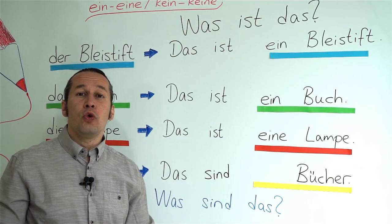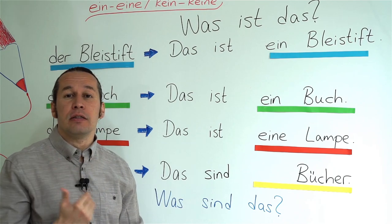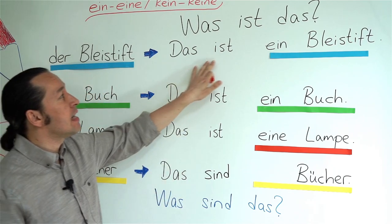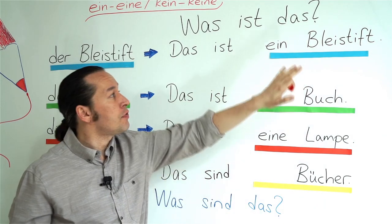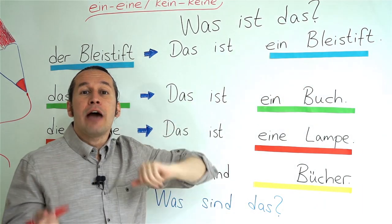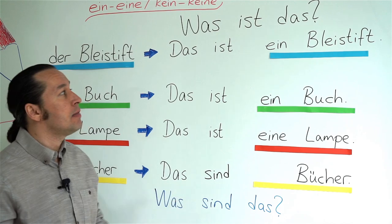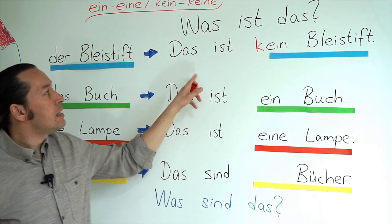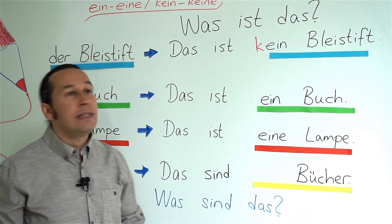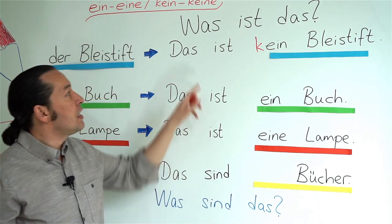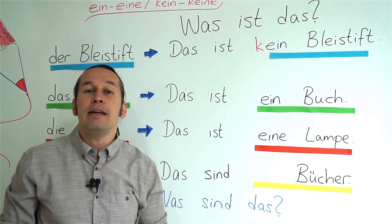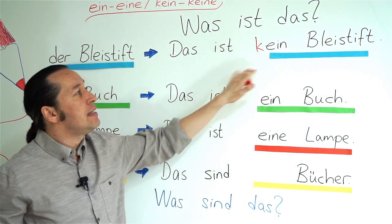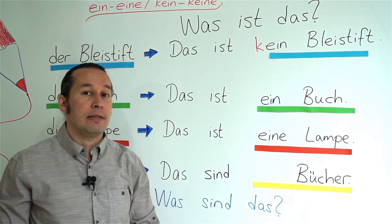What do I do if I mention a negative sentence? So easy. Instead of 'Das ist ein Bleistift' for 'this is a pencil', I say 'this is not a pencil' by writing 'kein': Das ist kein Bleistift — this isn't a pencil.